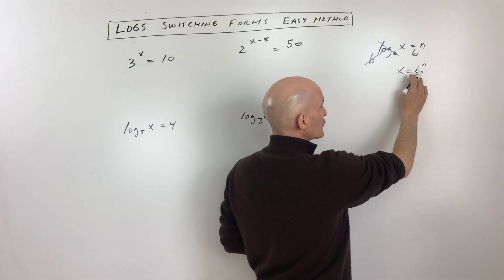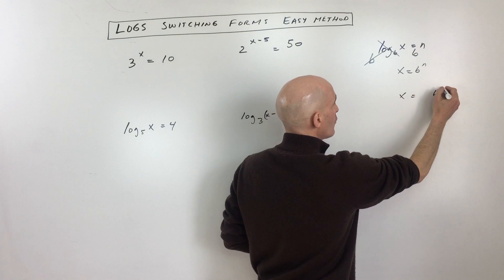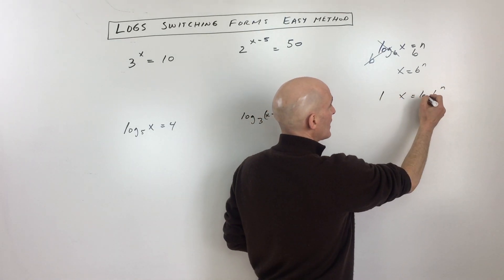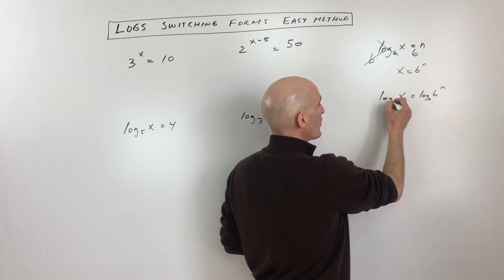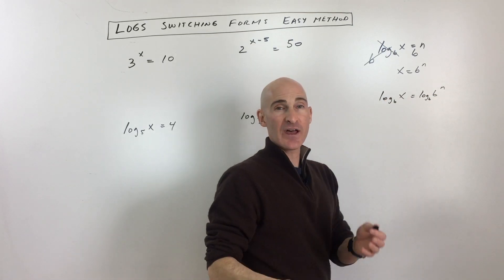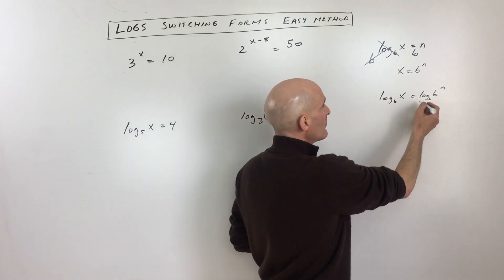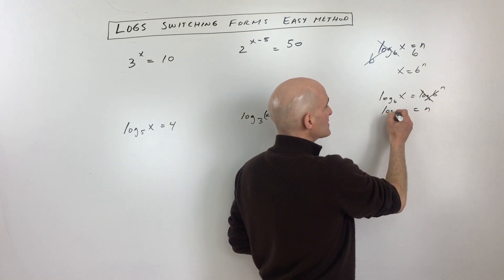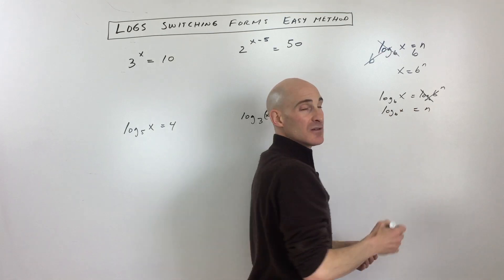Now if you have something in exponential form like this, we can do the inverse and say I'm going to take the log base b of the right side, and you want to do the same thing, take the log base b of the left side to keep the equation balanced. But you can see these are inverses of one another, so they cancel one another out and you can see now we're back to the original equation that we started with.